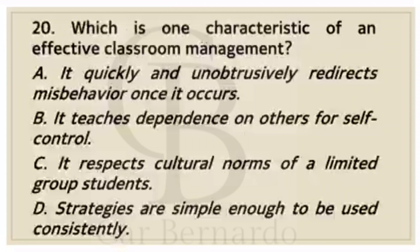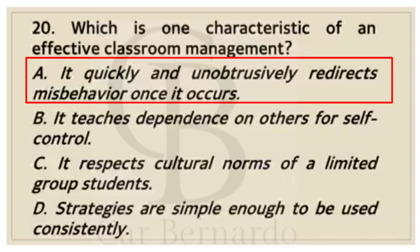Number twenty: Which is one characteristic of an effective classroom management? Letter A: It quickly and unobtrusively redirects misbehavior once it occurs. Letter B: It teaches dependence on others for self-control. Letter C: It respects cultural norms of a limited group student. Letter D: Strategies are simple enough to be used consistently. Answer: Letter A, It quickly and unobtrusively redirects misbehavior once it occurs.